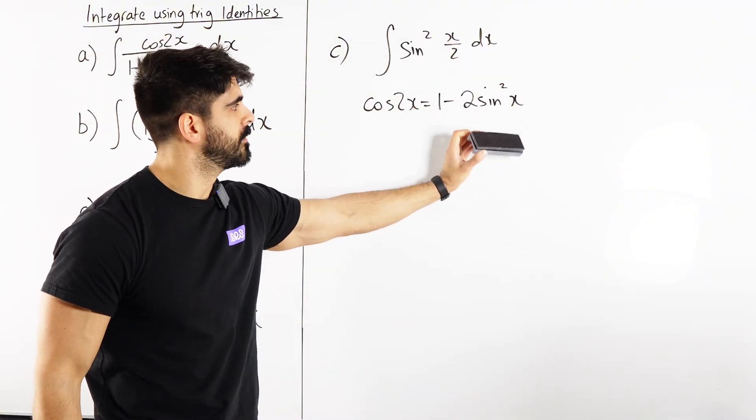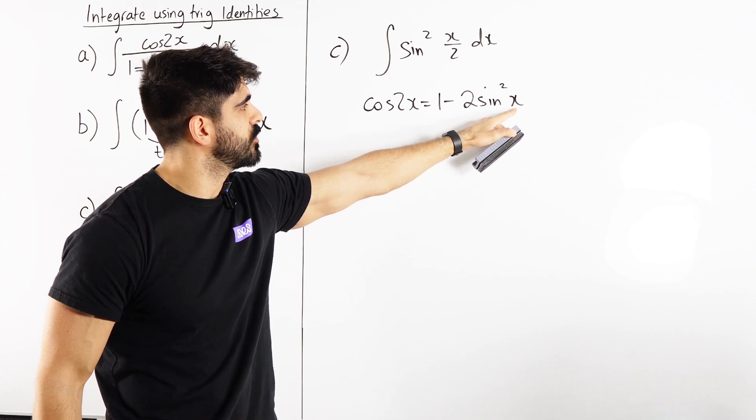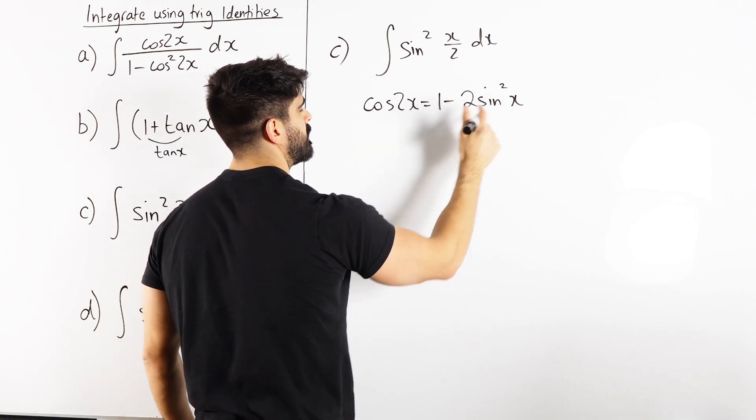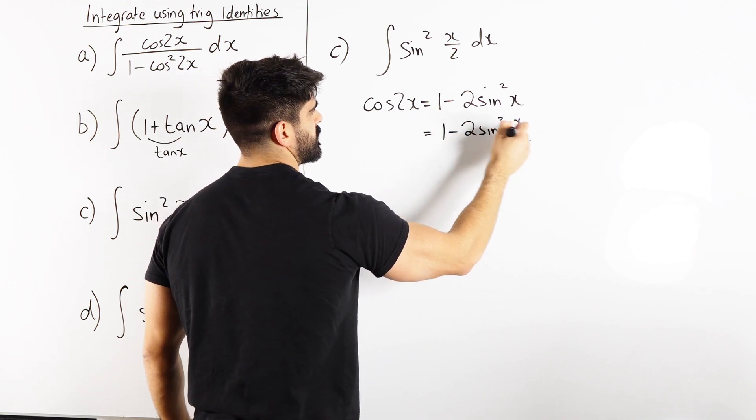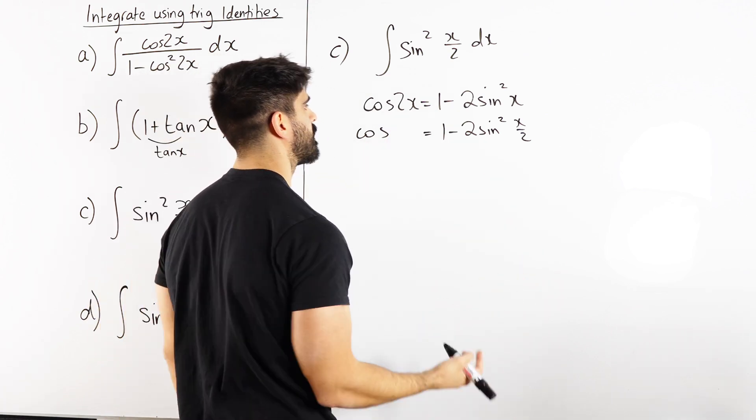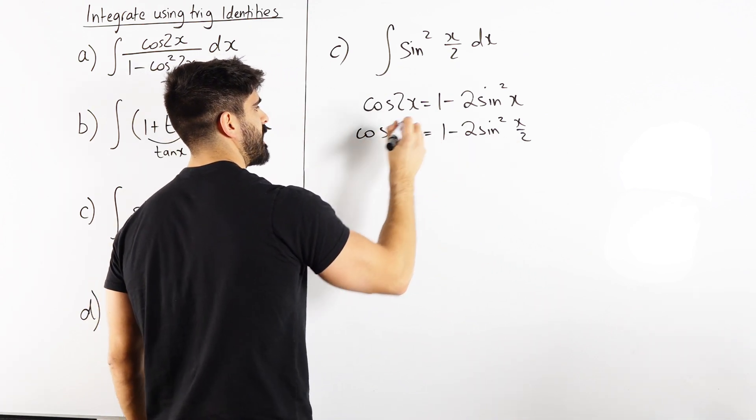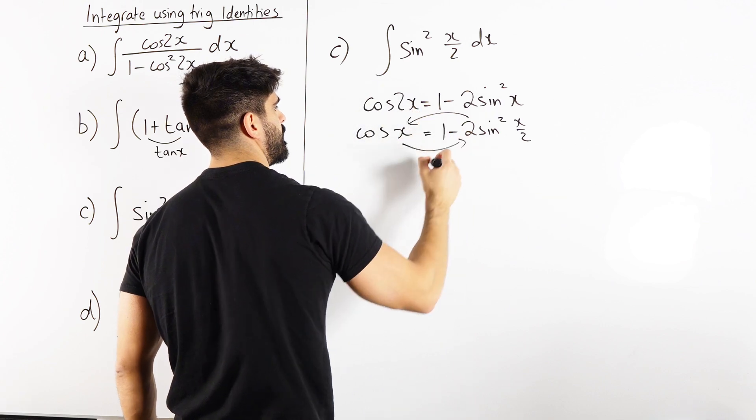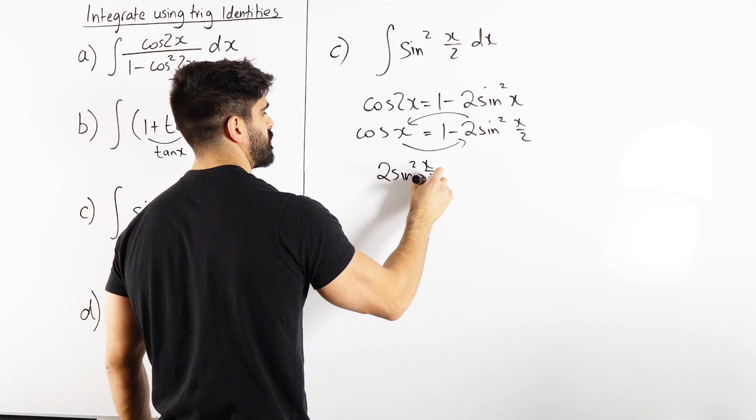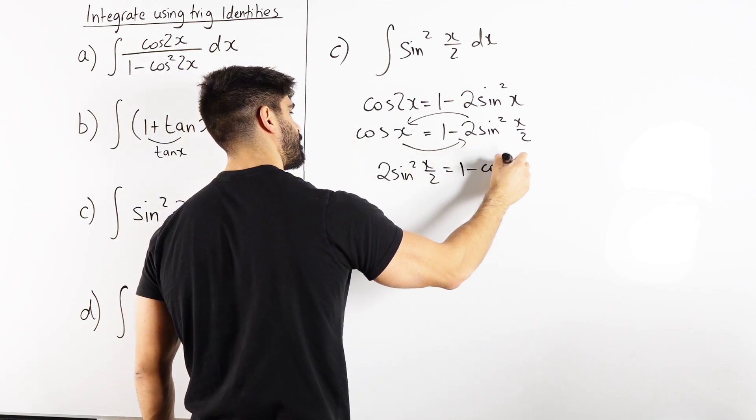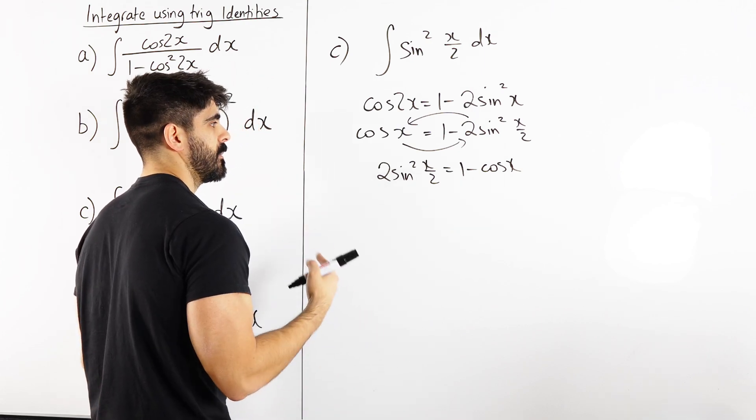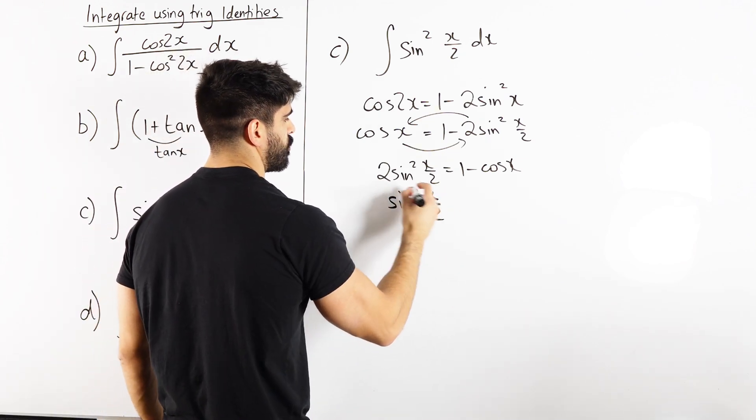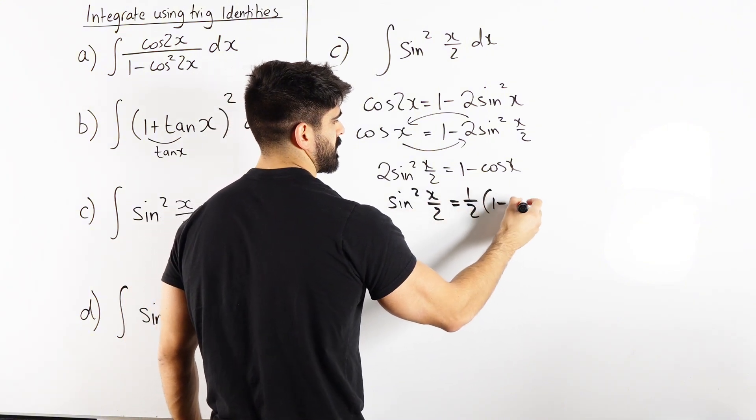Cos 2x is 1 minus 2 sine squared x. But we want sine squared x over 2, so it's not x anymore, it's x over 2. Now remember, this angle is double this one. So if I rewrite this as this, then the cosine double angle ID becomes what? When you double this, you get cos x. So actually, we're going to rewrite all of this in terms of cos x. So we're going to bring that here. So we're going to get 2 sine squared x over 2 is 1 minus cos x. Now we are going to divide by 2. But my advice to you is don't write half half. Write half bracket.